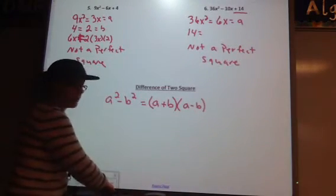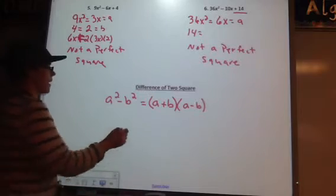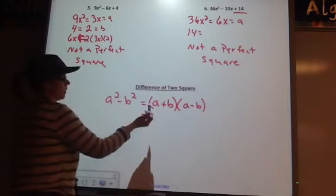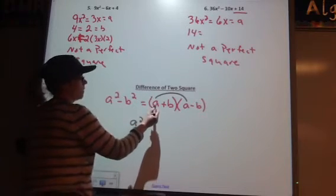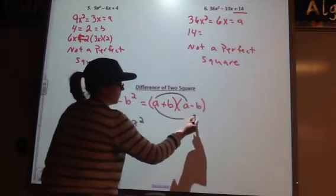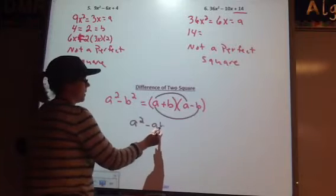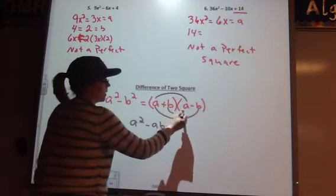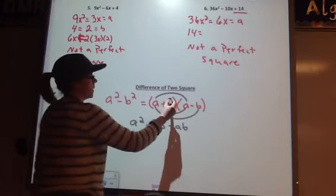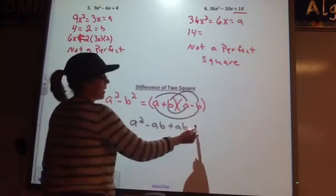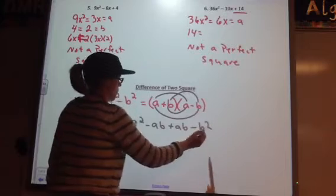All right, so let's FOIL it and make sure that these are equivalent. So a times a is a squared. A times a negative b is negative ab. B times a is a positive ab.